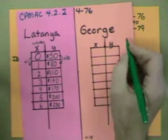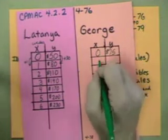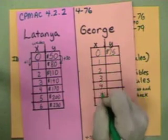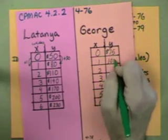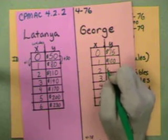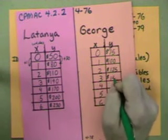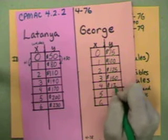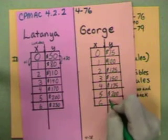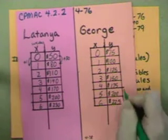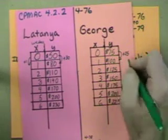George started out with $75. And that was at week zero. And he's going up by $25. So let's see. This week, he's going to have $100. This week, he's going to have $125. This week, he'll have $150. This week, he'll have $175. This week, he'll have $200. And this week, he'll have $225. I'm going to mark it. He's going up by $25 each time.